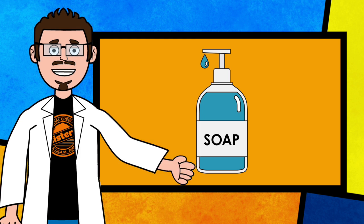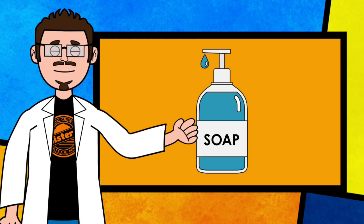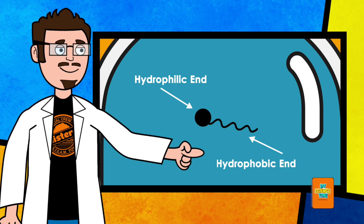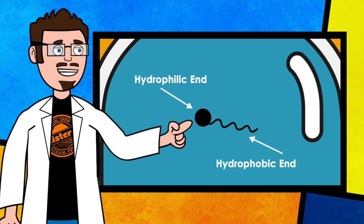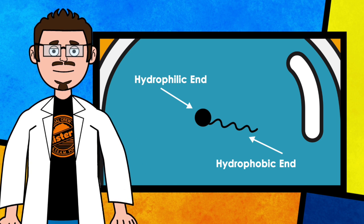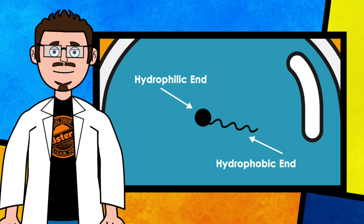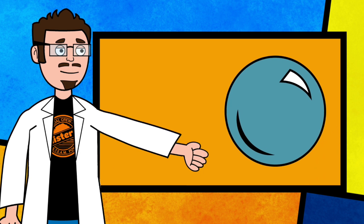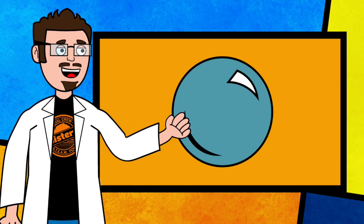Soap cleans our hands and it also reduces the surface tension of water. The reason soap works so well is because soap molecules have two ends: a hydrophobic end and a hydrophilic end. The hydrophilic end is attracted to water, while the hydrophobic end avoids water and is attracted to grease and oils. When you blow air into the soapy solution, the air gets trapped inside and forms a bubble.